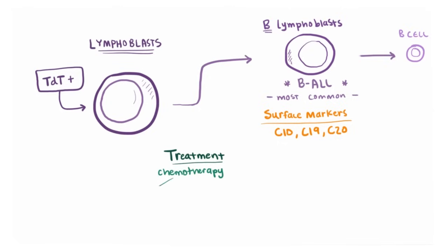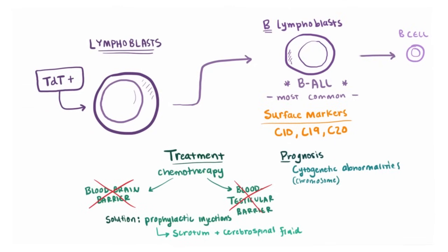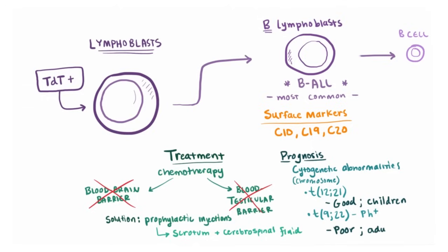Treatment of B-ALL usually involves chemotherapy with a very good response. One important thing to remember is that chemotherapy goes into the blood but can't cross the blood-brain barrier or the blood-testicular barrier, so patients often need prophylactic injection of chemotherapy into the scrotum and the cerebrospinal fluid. Looking at cytogenetic abnormalities — chromosomal abnormalities — can indicate prognosis. A translocation of chromosomes 12 and 21 (t12;21) gives a pretty good prognosis and tends to happen more in children, while a t(9;22) translocation — the Philadelphia chromosome — carries a poor prognosis and is seen more in adults.